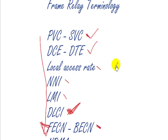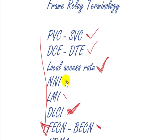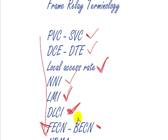We've covered a few terms here: local access rate, which is what we've paid for, NNI, and LMI. I'm going to go through all of these again when we're actually configuring the routers, so don't worry if it hasn't quite clicked yet.